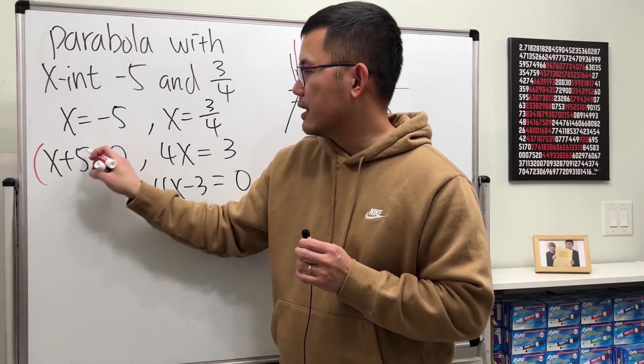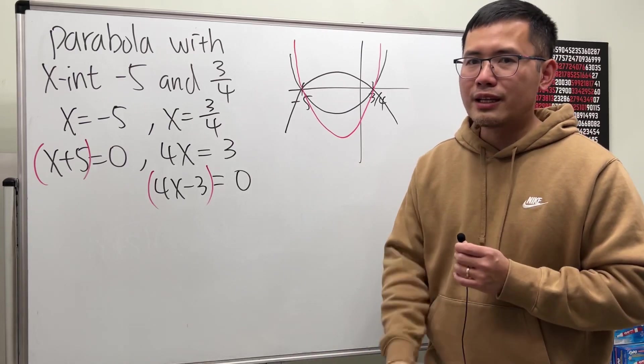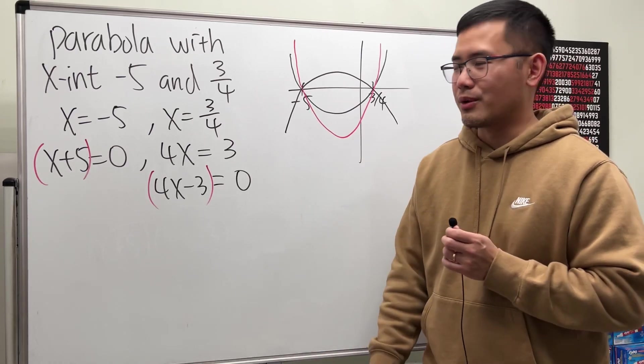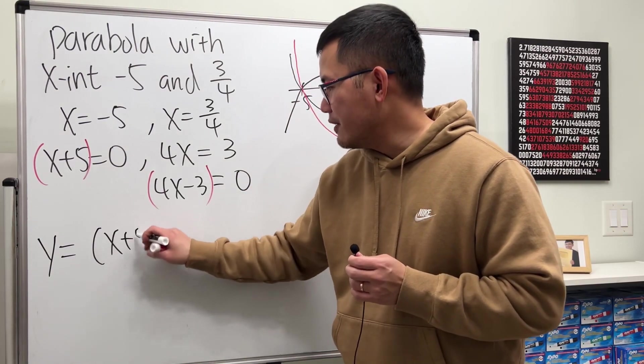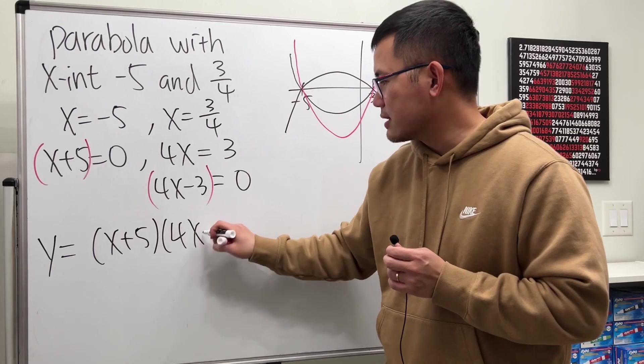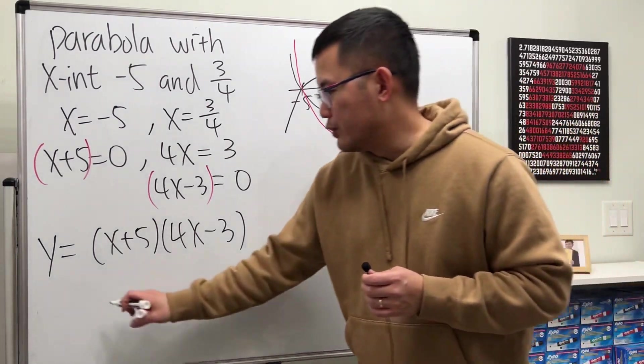So, here, we can take this as the first factor, and that as the second factor, and multiply them, and that will give you the structure of the parabola. Have a look. Let's take y equals x plus 5, times 4x minus 3. Let's just multiply out and see if we can get the answer or not.